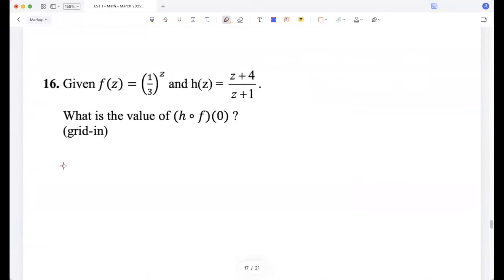Given f(z) is (1/3)^z and h(z) is this, what is the value of h(f(0))? So which is h of f(0). And f(0) is (1/3)^0, which is 1. And h(1) is (1 + 4)/(1 + 1). So that's 5/2.